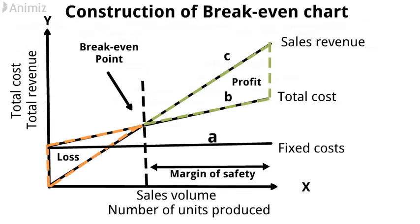The angle of incidence is the angle at which the sales revenue line cuts the total cost line. A large angle indicates that profit is being made at a high rate. A high margin of safety combined with a large angle of incidence is an indication of a favorable business position.